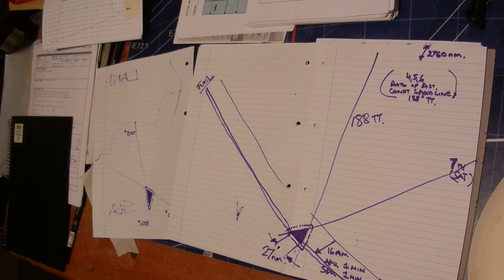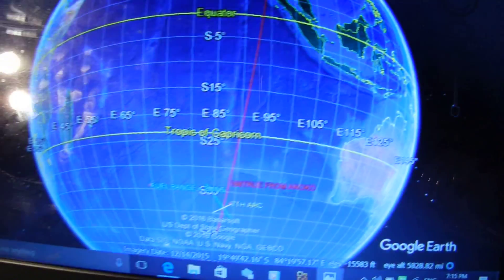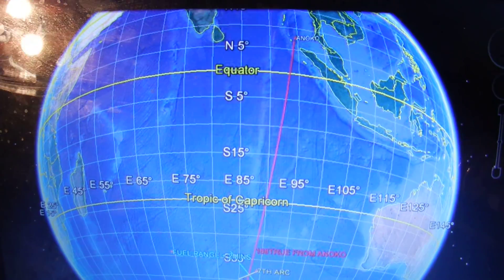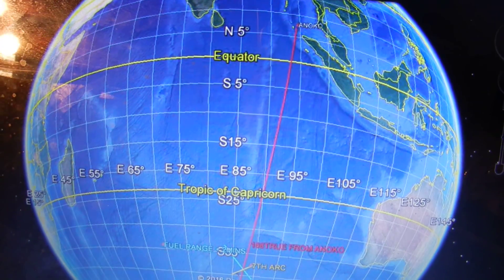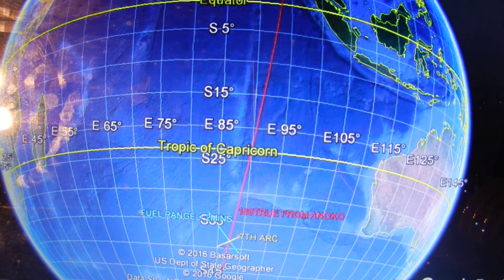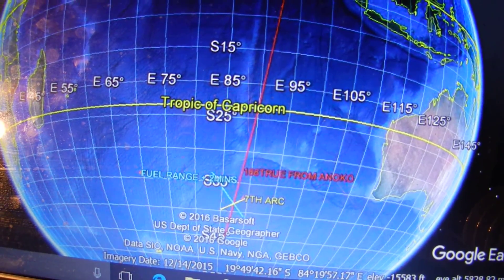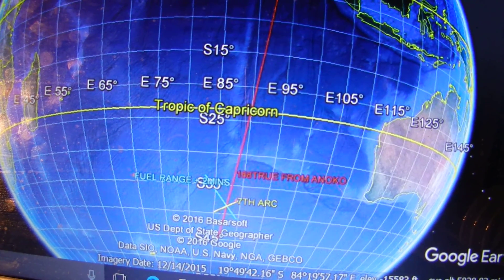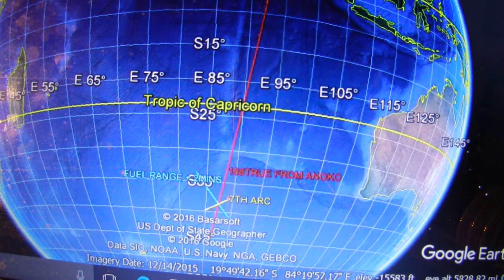Let me show you that on the computer. The actual Google Earth picture is this. As you can see at the top there, drawn on Anoko, and then the 188 true track goes down all the way down there to the southern ocean. Then you can see the seventh arc is in yellow and the fuel range plus two minutes is in blue, and they all meet in the same little triangle.